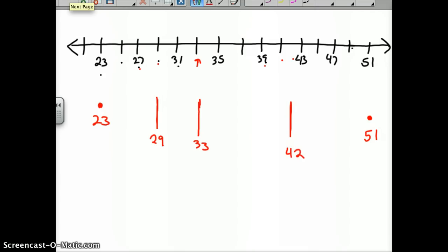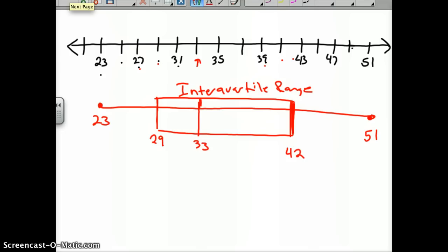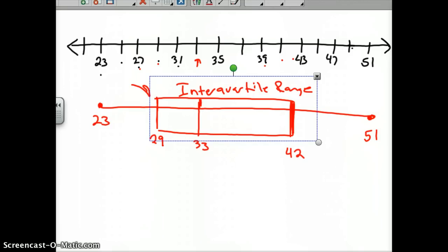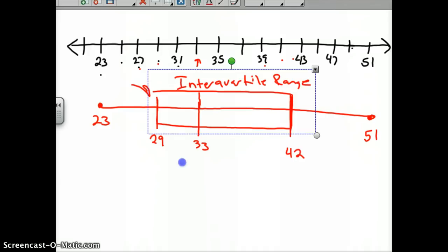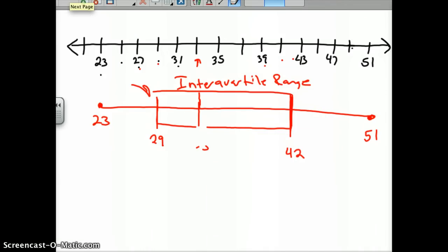Quartile 3 is 42. 42 occurs in between there, and you draw a box to represent this interquartile range. That's the middle of our data. Then I draw a line connecting—generally, the box is centered. There's my interquartile range, the middle half of our data.